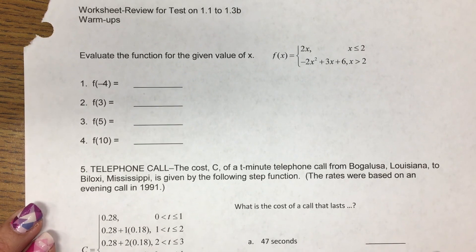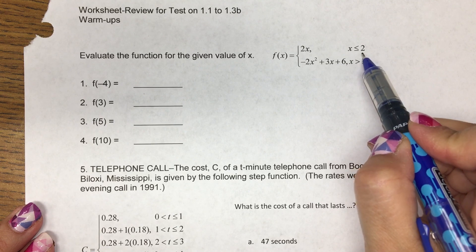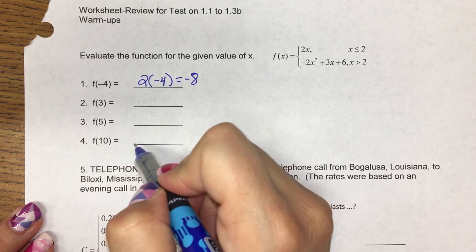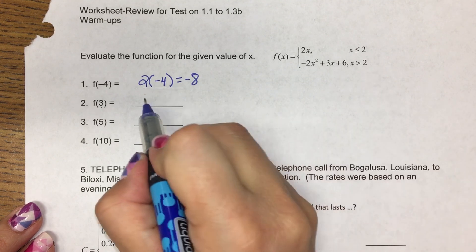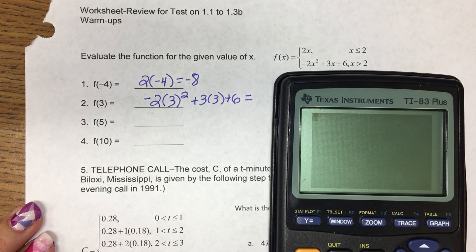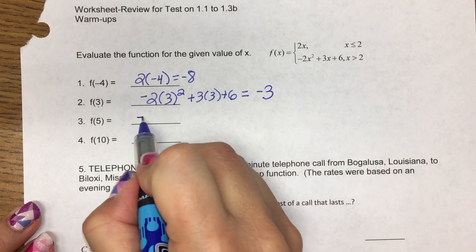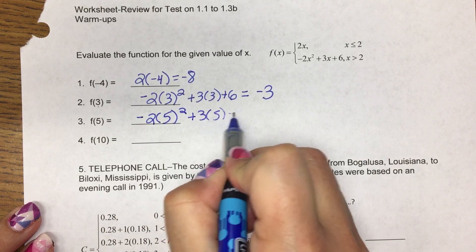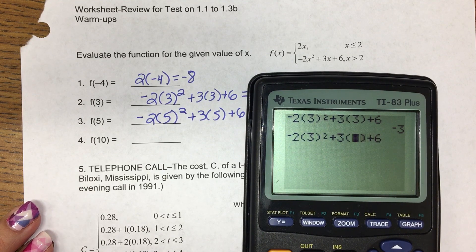Okay. This third, the last review page. Negative 4. I have to figure out which piece to plug that into. So I say, is negative 4 less than or equal to 2? Yes. So I plug that in there and get negative 8. 3. Is 3 less than or equal to 2? No. Is 3 greater than 2? Yes. So I plug that into this piece. The parentheses are important because of your exponents and negatives. Negative 3. 5 is also greater, so it goes into the bottom piece. Check this out. If you hit 2nd, enter, it brings back up what you typed. And I can just go replace those 3's with 5's. Negative 29.